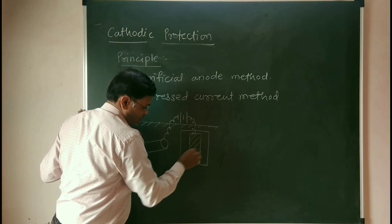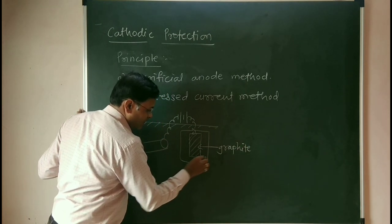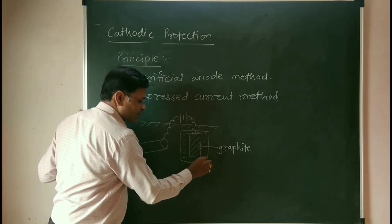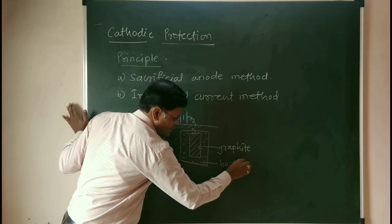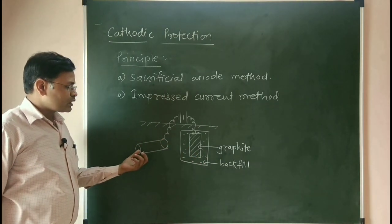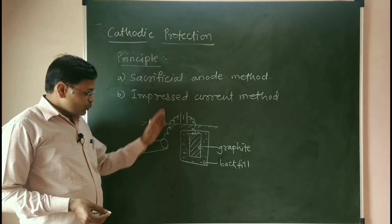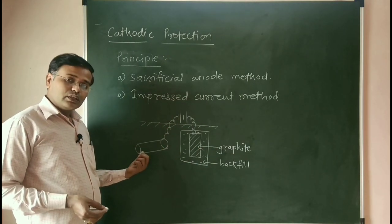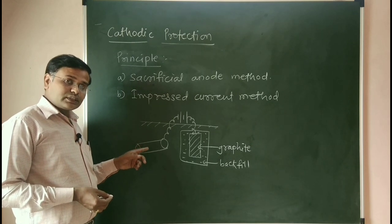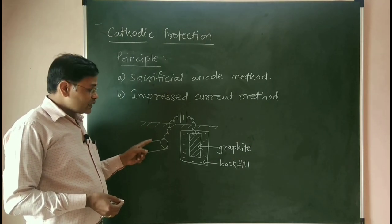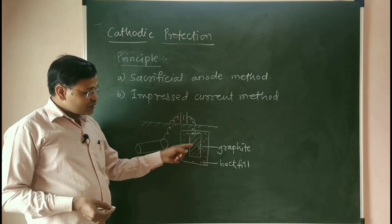The graphite electrode is placed in a backfill consisting of gypsum or coke bridge backfill. The metal to be protected from corrosion is connected to the negative terminal of the battery. Naturally, before connecting, this metal was acting as anode because its corrosion was taking place. Now we connect this metal to the negative terminal, and the graphite or scrap iron to the other terminal.